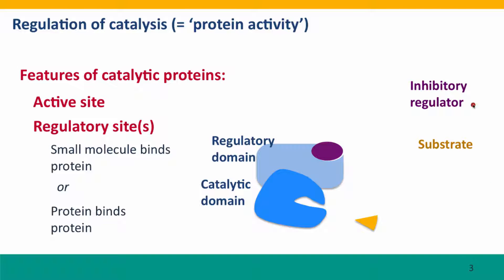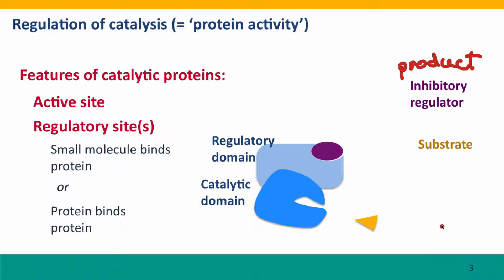This kind of inhibition can happen in response to various cellular changes. One particularly common kind is where the inhibitory regulator is actually the product of the reaction — the molecule the substrate is normally converted into. When the cell already has plenty of product, it doesn't want any more, so the product serves as an inhibitor and shuts the enzyme off, so no more product is made.